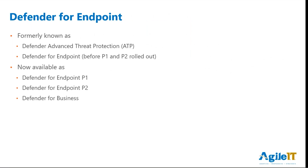Defender for Endpoint has gone through a couple of name changes — Microsoft loves their name changes. It was formally known as Advanced Threat Protection, or ATP, and then Defender for Endpoint before Plan 1 and Plan 2 were rolled out. Now we have those two enterprise versions — Plan 1 and Plan 2 — and also Defender for Business. Defender for Business cannot be applied to enterprise licensing; it's only for Microsoft 365 Business Basic, Standard, or Premium.